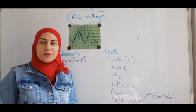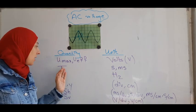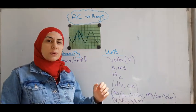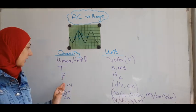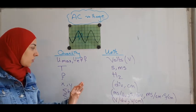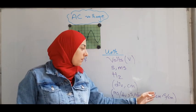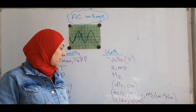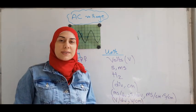Now, let's check the units of these quantities. U maximum and U effective are usually expressed in volts. The period T in seconds or milliseconds. The frequency is always in hertz. The X and Y in divisions or centimeters. SH is in milliseconds per division, second per division, millisecond per centimeter or second per centimeter. And SV is in volts per division or volt per centimeter.